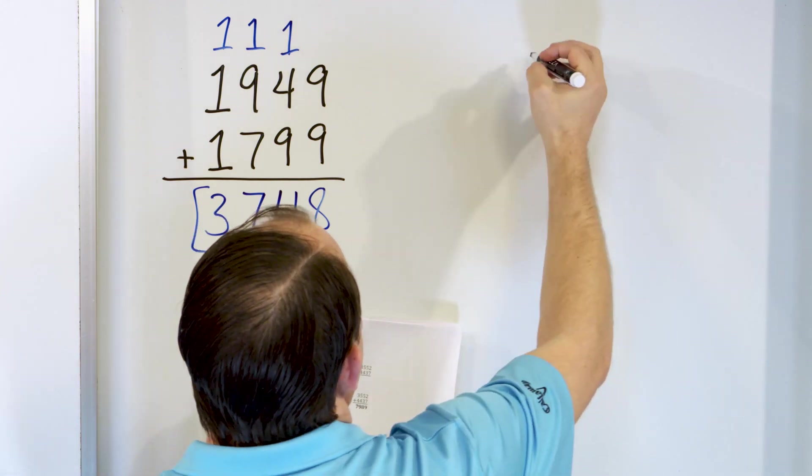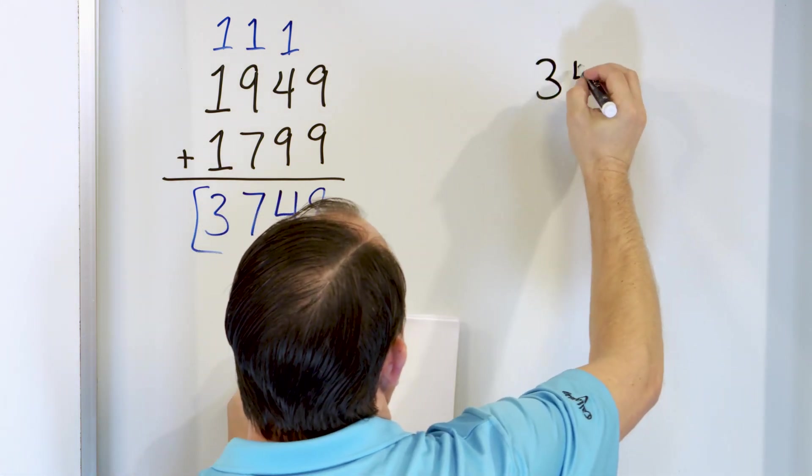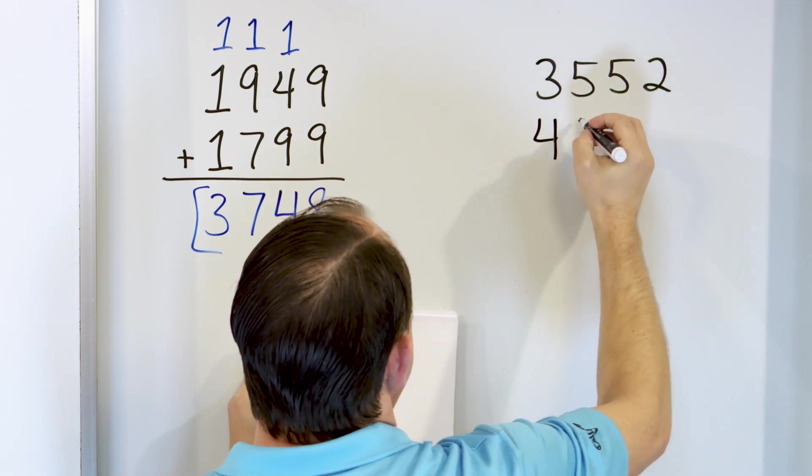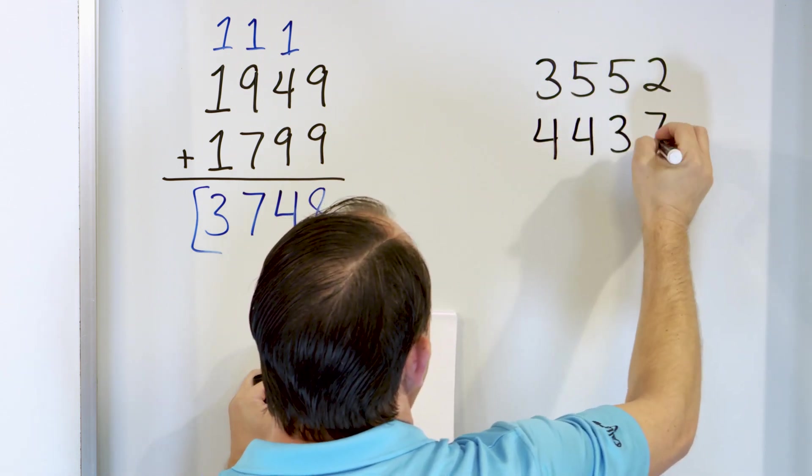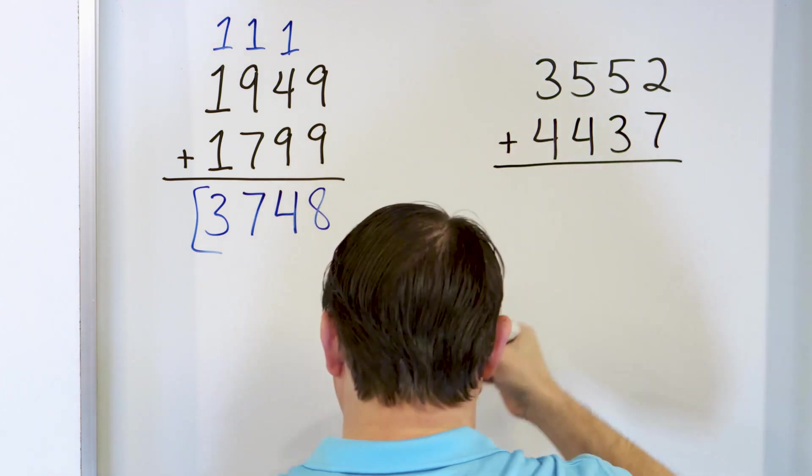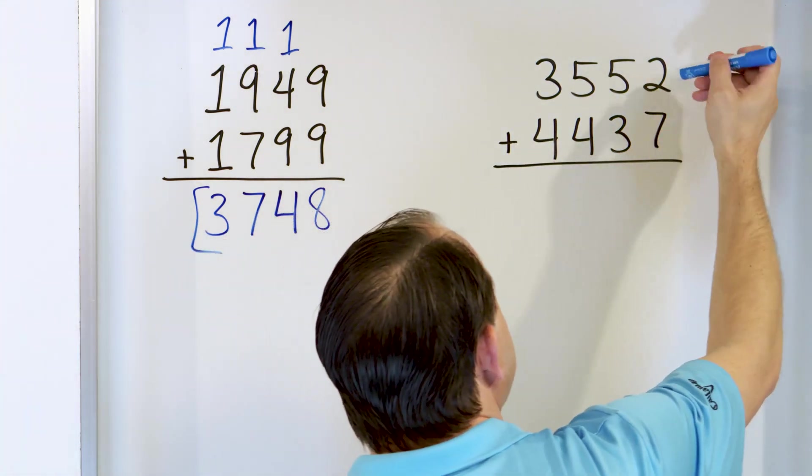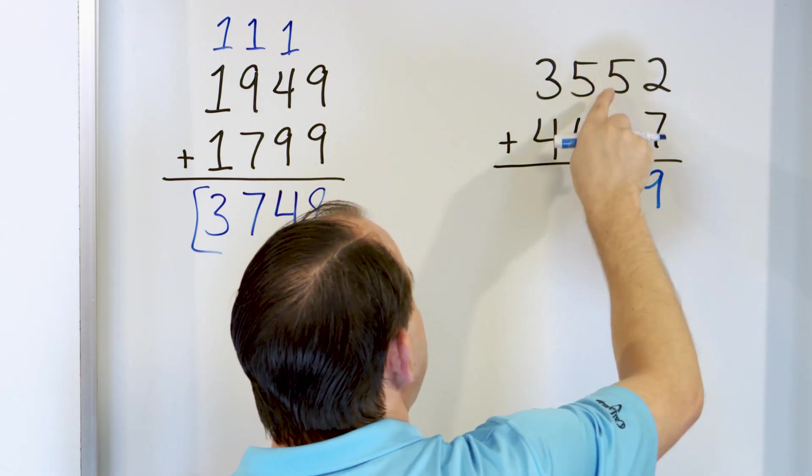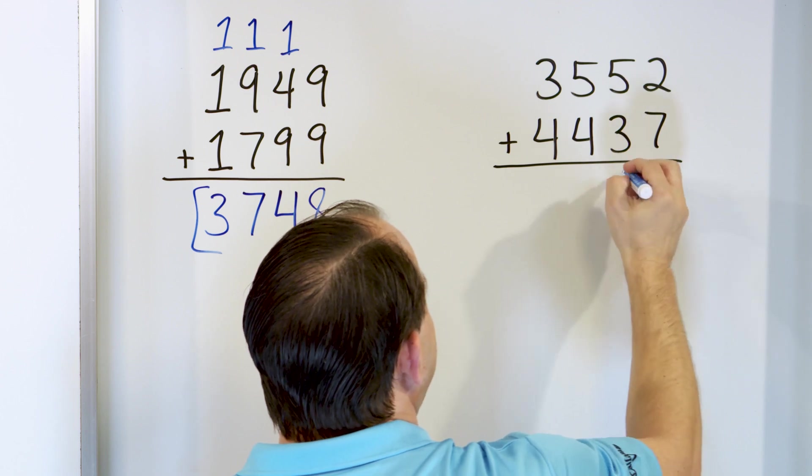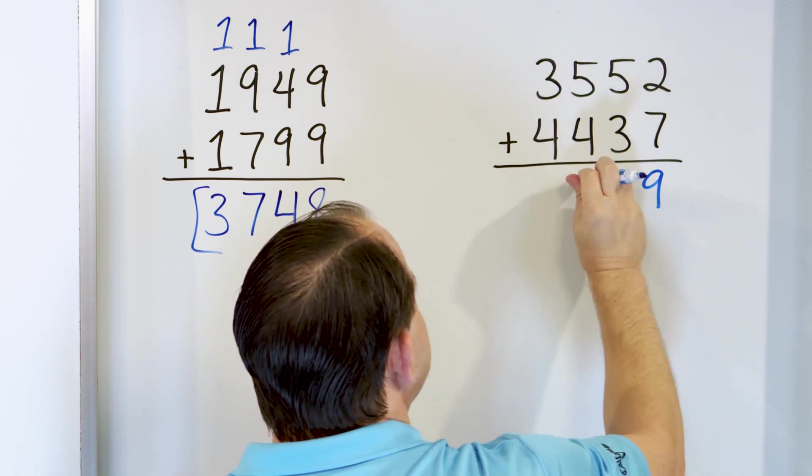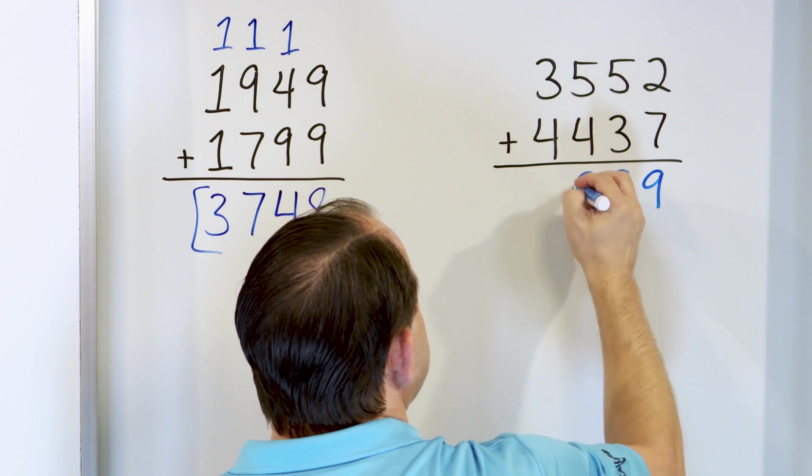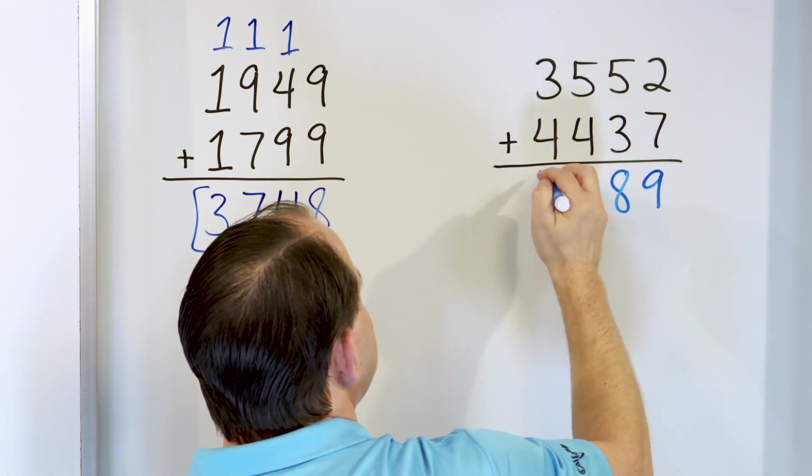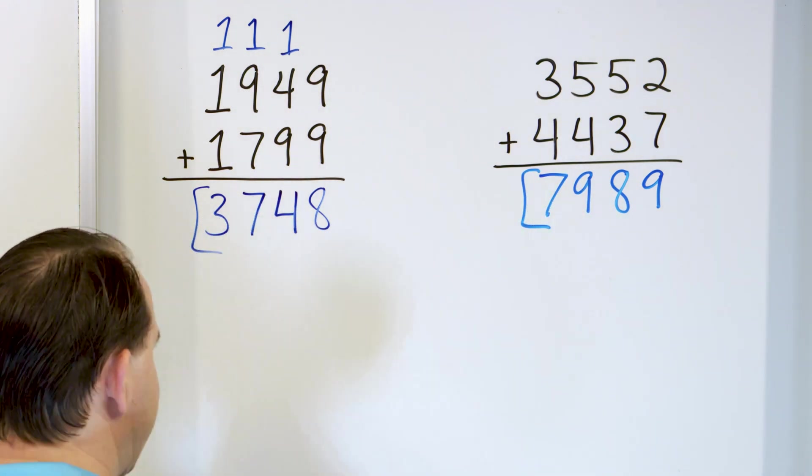3 more problems. Let's take a look at 3,552 and we'll add to that 4,437. We'll add these together. So what do we have? 7, let's go up. 8, 9. So we'll have 9 in this column. 5, let's go up. 6, 7, 8. 8 goes right here. 5, let's go up. 6, 7, 8, 9 goes right here. And then 4, let's go up. 5, 6, 7 right here. So we didn't have to do any carrying or anything. 7,989.